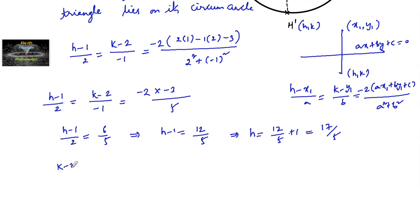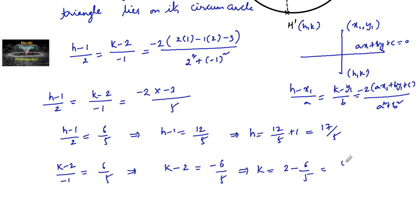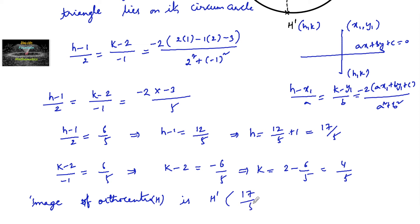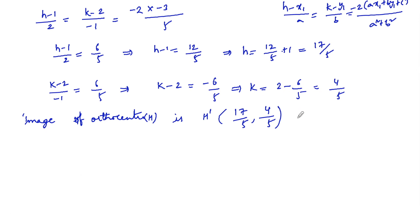For k: (k - 2)/(-1) = 6/5, so k - 2 = -6/5, giving k = 2 - 6/5 = 4/5. So the image of the orthocenter H' is (17/5, 4/5). This point lies on the circumcircle of the triangle.